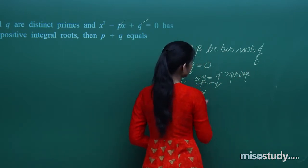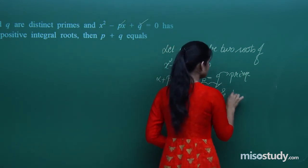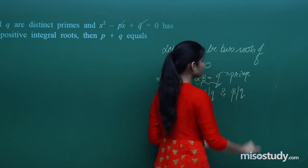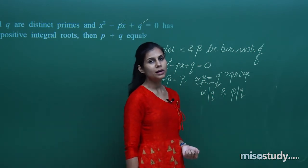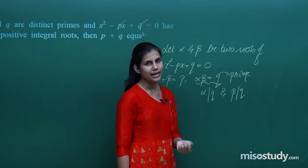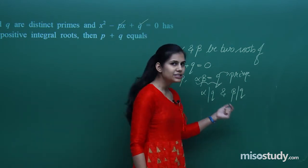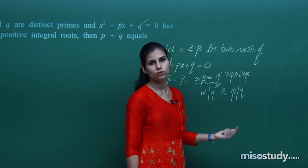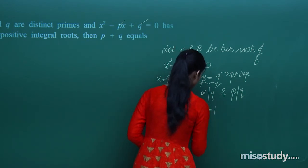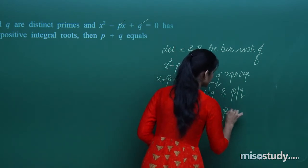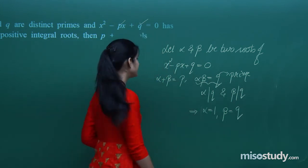Since alpha · beta = q and q is prime, by this relationship alpha divides q and beta also divides q. But because q is prime, only two numbers can divide q: 1 and q. Therefore alpha = 1 and beta = q.